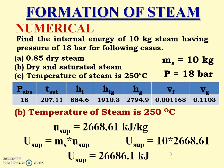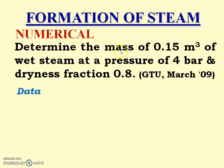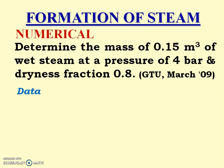The second problem: determine the mass of 0.15 m³ of wet steam at a pressure of 4 bar with dryness fraction x = 0.8. The total volume (0.15 m³) is not specific volume; it is the volume of the total mass present, and we need to find that mass.